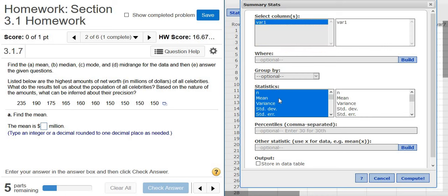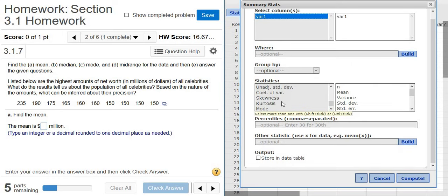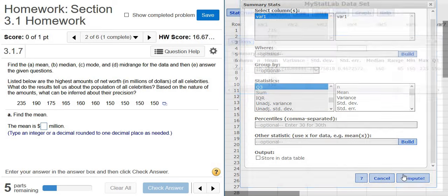The mode is down here. You can scroll down—where is it? There it is. Mode. You can hold Ctrl and then left-click so everything else doesn't go away. Then click Compute.